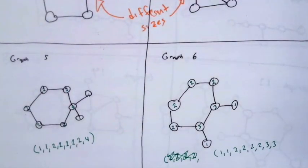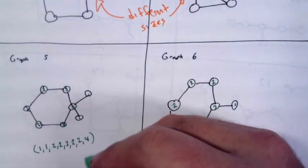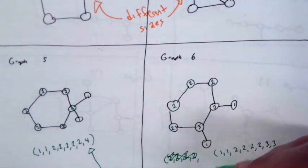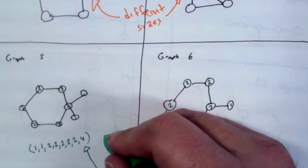These graphs you can see visually are different, but the precise reason we can give that does not appeal to the diagram is that these two graphs have different degree sequences.